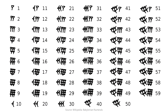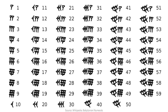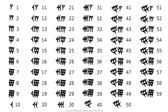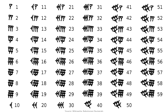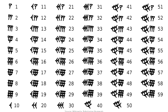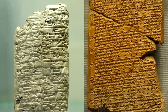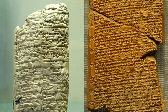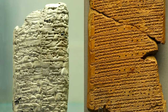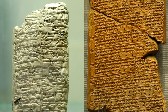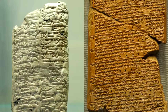A few millennia ago, the Sumerians, Egyptians, and Chinese were recording written counts of items, animals, people, and astronomical observations. They recorded these data using clay tablets, papyrus, and parchment using early writing systems like cuneiform, hieroglyphics, and logographs.